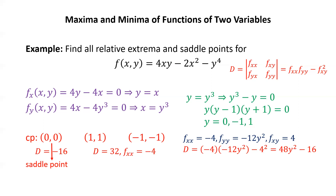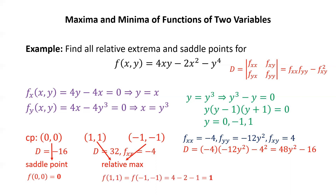Think of the hyperbolic paraboloid and what the center looks like with an upward-facing parabola and a downward-facing parabola — that's the look of a saddle point. At (1,1) and (−1,−1), D is positive and fxx is negative, so we have a relative maximum at each of those positions. The value of the function at the saddle point (0,0) is f(0,0) = 0. The relative maximum value is f(1,1) = f(−1,−1) = 4 minus 2 minus 1 = 1. The relative maximum is 1, occurring at both (1,1) and (−1,−1).